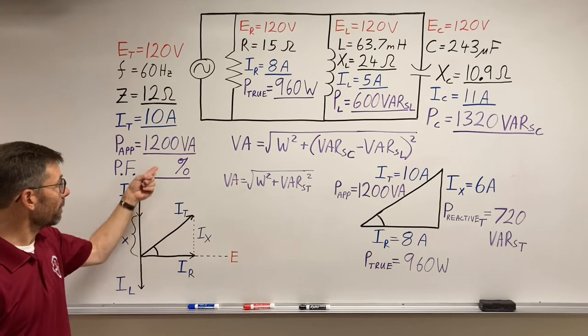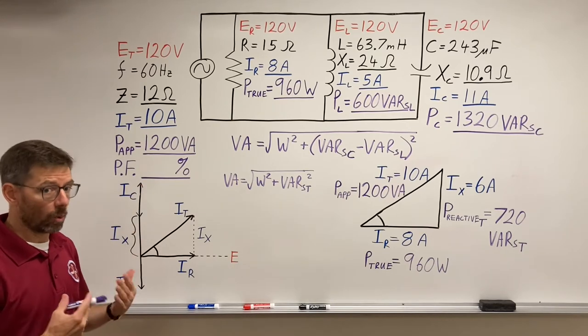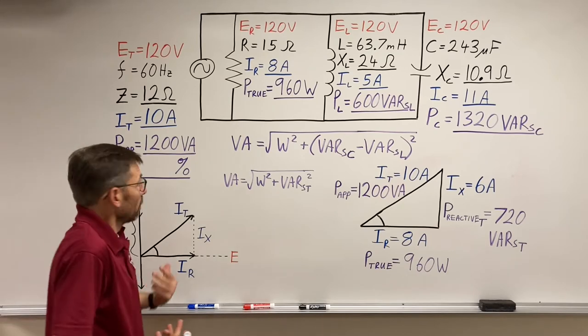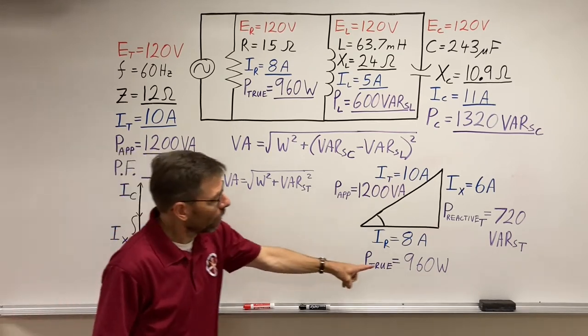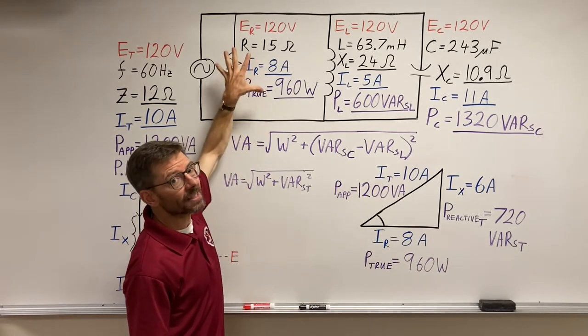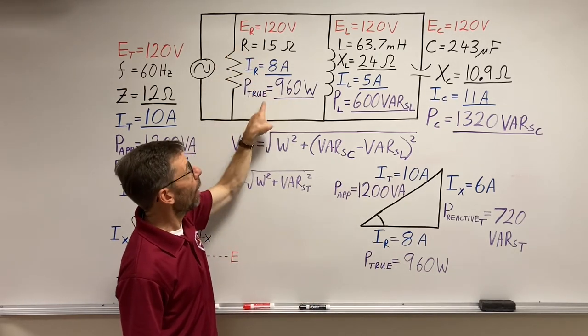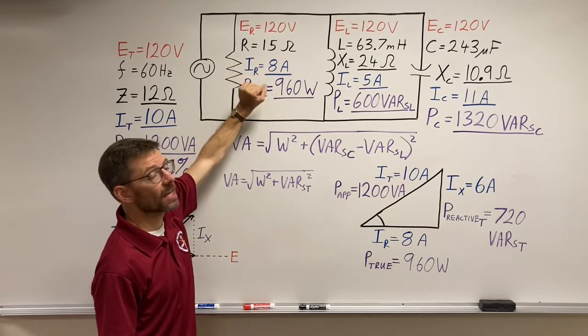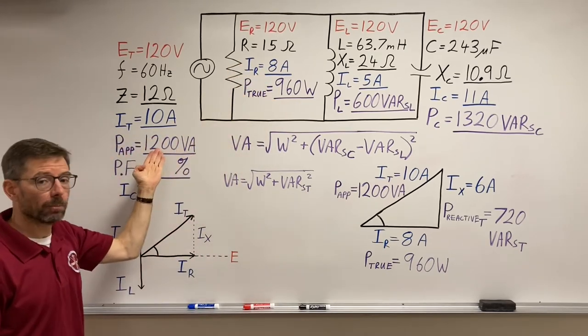Now that we've got our power numbers, power factor is not a problem. Once again, just like in the series circuit, power factor is watts divided by volt amps. How much real work is getting done? The power, the watts, they're on the resistor. How much real work is getting done for all I have to put into the circuit?